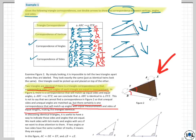This is not to say that we cannot find a correspondence in figure 2 so that unequal sides and unequal angles are matched up. But there certainly is one correspondence that will match up angles with equal measurement and sides of equal length, making the triangles identical. So they have to actually, each corresponding one. Now you can make correspondences that are unequal. So that's what they're trying to point out here. You can make correspondences that are unequal. But the only way they can be identical is if all those correspondences are equal.